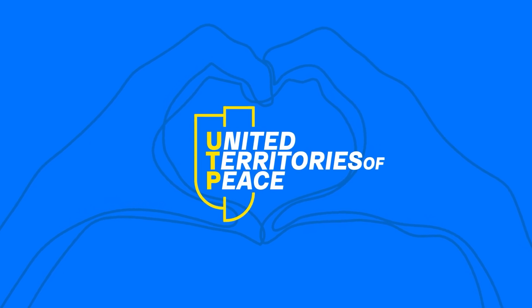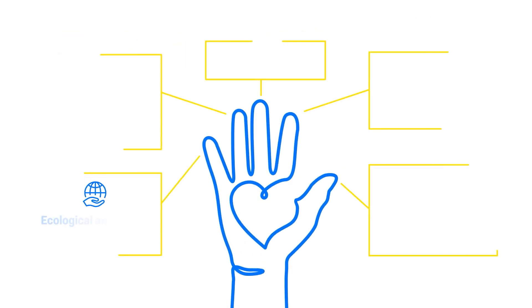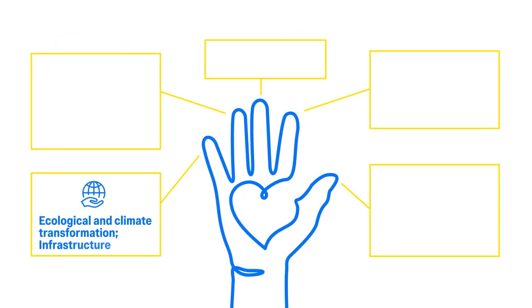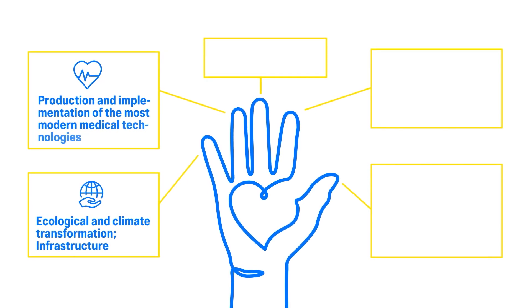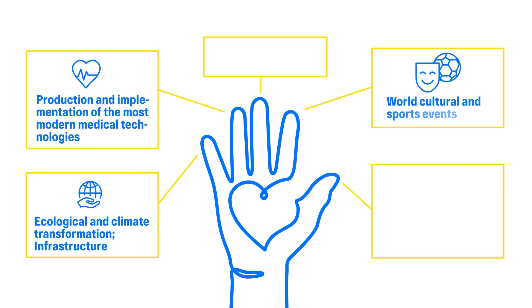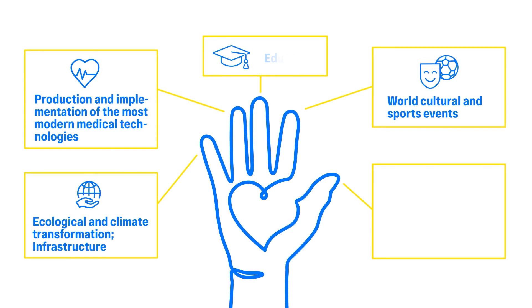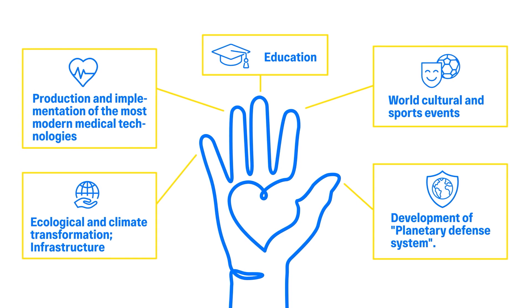United Territories of Peace. UTP Priority Areas: Ecological and Climate Transformation, Infrastructure, Production and Implementation of the Most Modern Medical Technologies, World Cultural and Sports Events, Education, and Development of the Planetary Defense System.